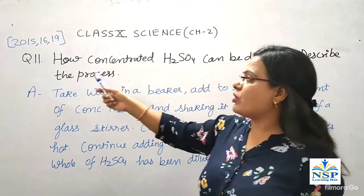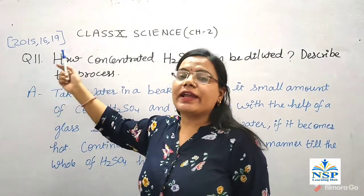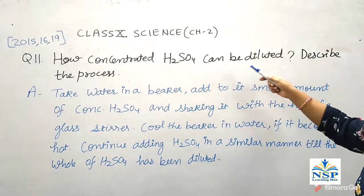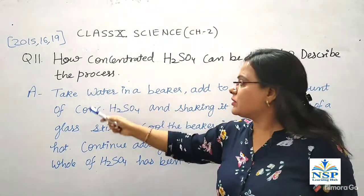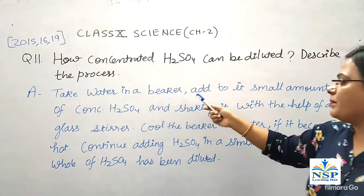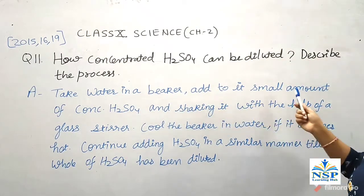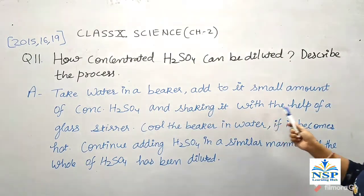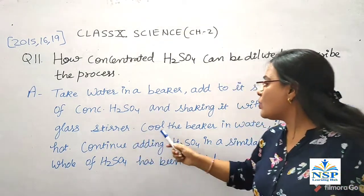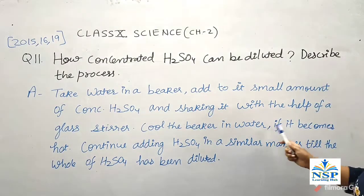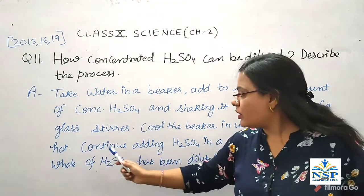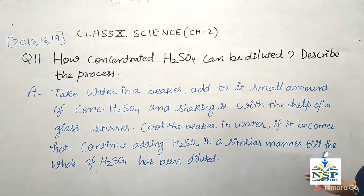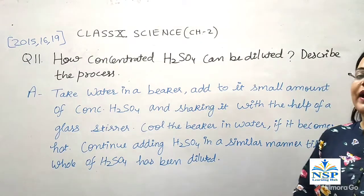Question number 11 is a practical-based question: How can concentrated H2SO4 be diluted? Describe the process. Take water in a beaker, add to it a small amount of concentrated H2SO4 and stir it with the help of a glass rod. Cool the beaker in water if it becomes hot. Continue adding H2SO4 in a similar manner till the whole of H2SO4 has been diluted.